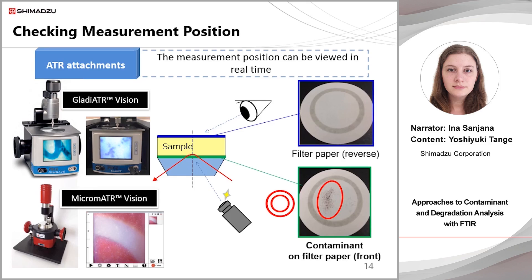There are ATR attachments that address this problem of sample positioning. The Gladiator Vision and Micrometer Vision shown here observe the area being measured in real time. The camera on the measuring surface side transmits an image to a monitor on the ATR device or on a PC, making it easy to adjust the sample position to measure contaminants on the surface and discoloured areas directly.